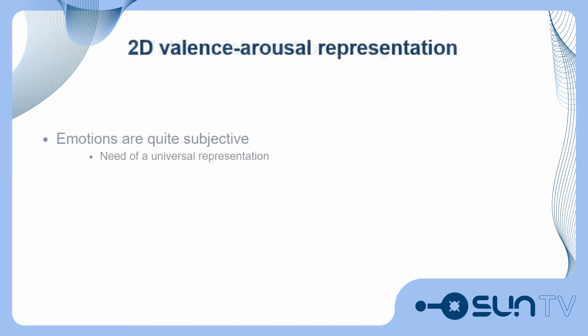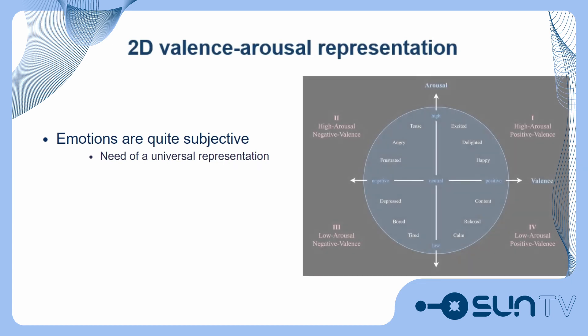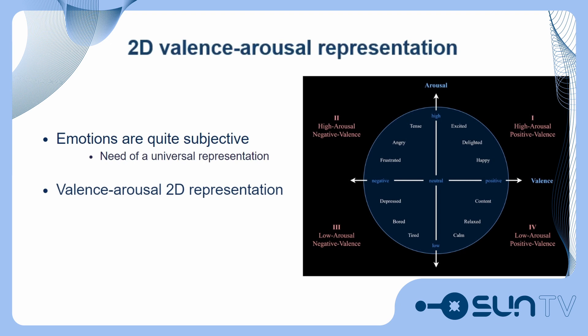Since emotions are quite subjective to be described, there is a need for a universal representation of emotions. This representation is the valence-arousal 2D emotion representation. In this 2D space, valence denotes the unpleasant to pleasant quality of emotions, whereas arousal refers to the intensity of the emotions from calm to excited.